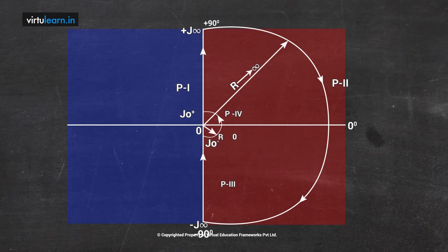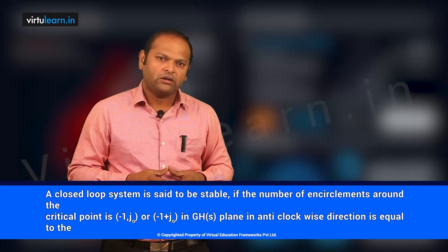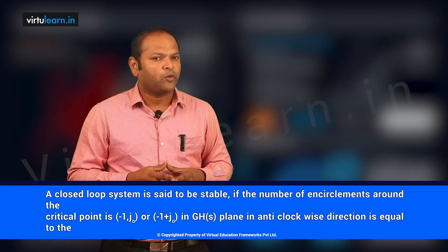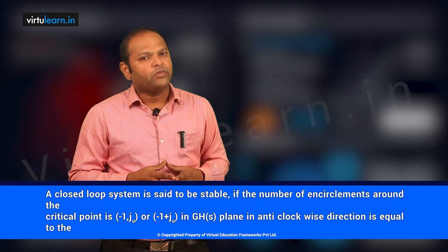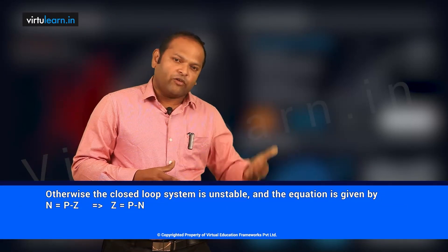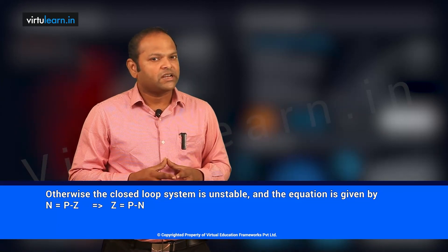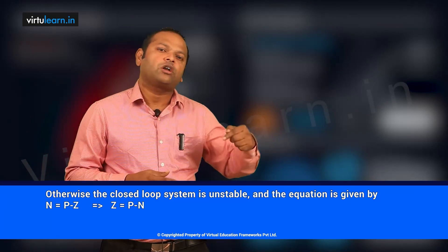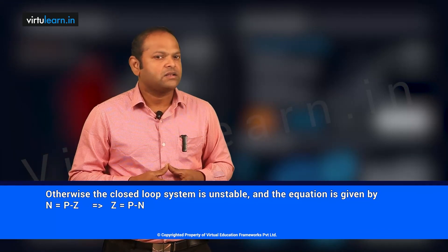Since G·H(s) equals q(s) minus 1, the reference point shifts from the origin in the Principle of Argument to the critical point -1+j0 in Nyquist stability. Therefore, we look at the number of encirclements around the critical point -1+j0. The Nyquist stability statement is: a closed-loop system is stable if the number of anticlockwise encirclements around the critical point equals the number of open-loop poles in the right-half s-plane. Otherwise, the system is unstable.